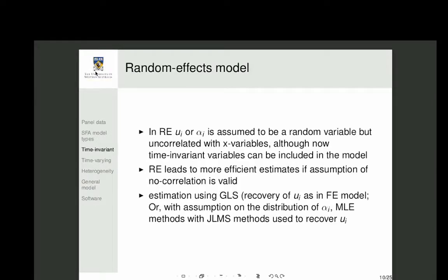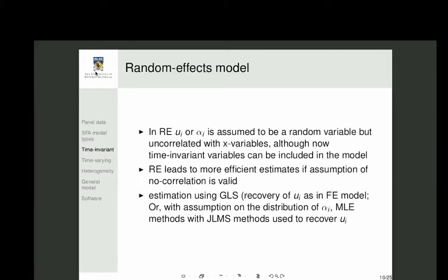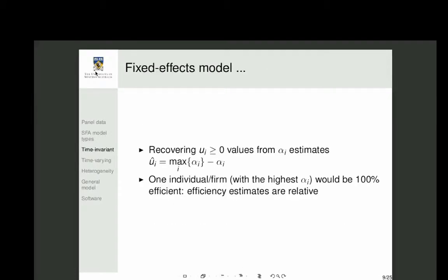The random effects model has advantages: since u_i is treated as a random variable, you can include time-invariant variables in the model that would be confounded with a fixed effect. It also yields more efficient estimates when inefficiency is uncorrelated with the regressors. However, estimation requires maximum likelihood or specialized methods like generalized least squares. Both fixed and random effects models give time-invariant inefficiency.